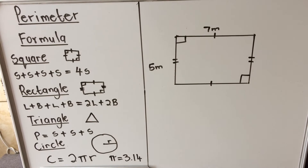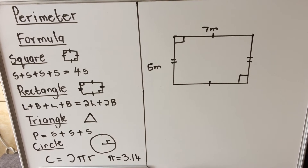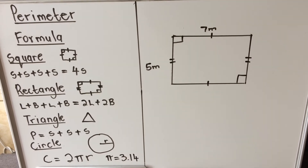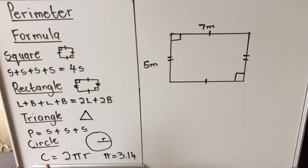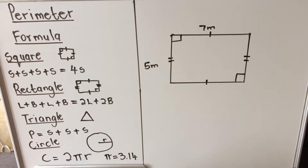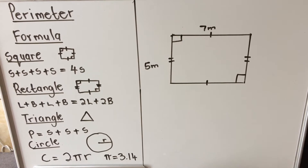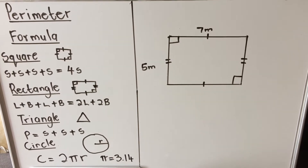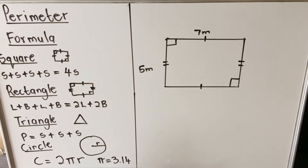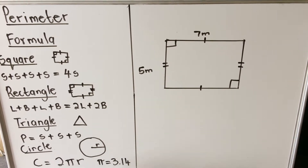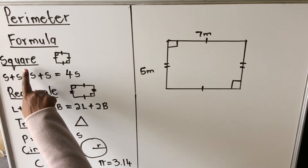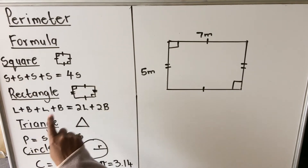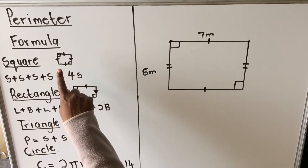Hello everyone, this is a lesson on perimeter. I'm going to show you formulas and two examples on how to calculate perimeter. Perimeter is the distance around an object.